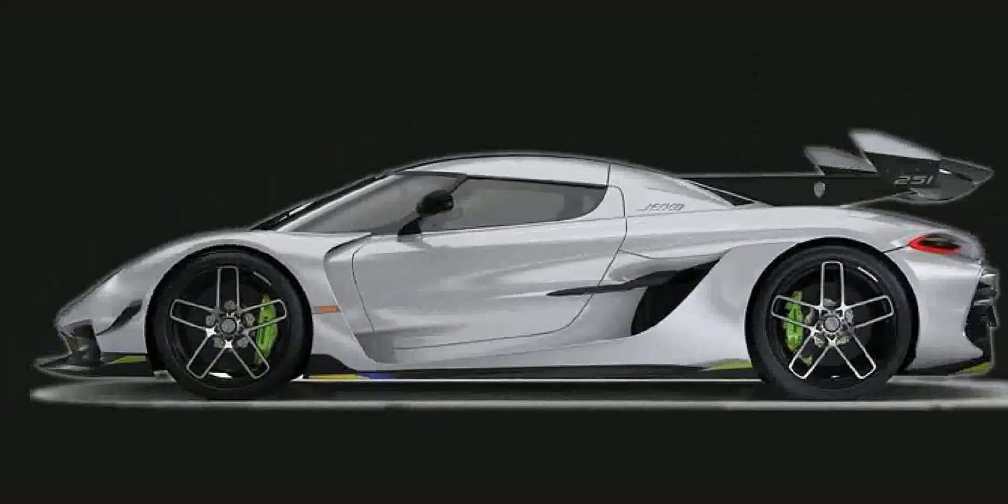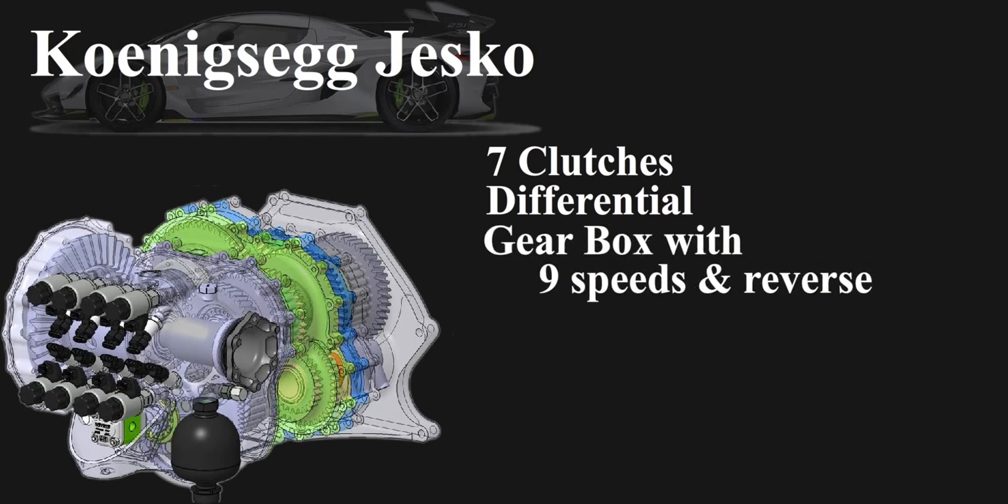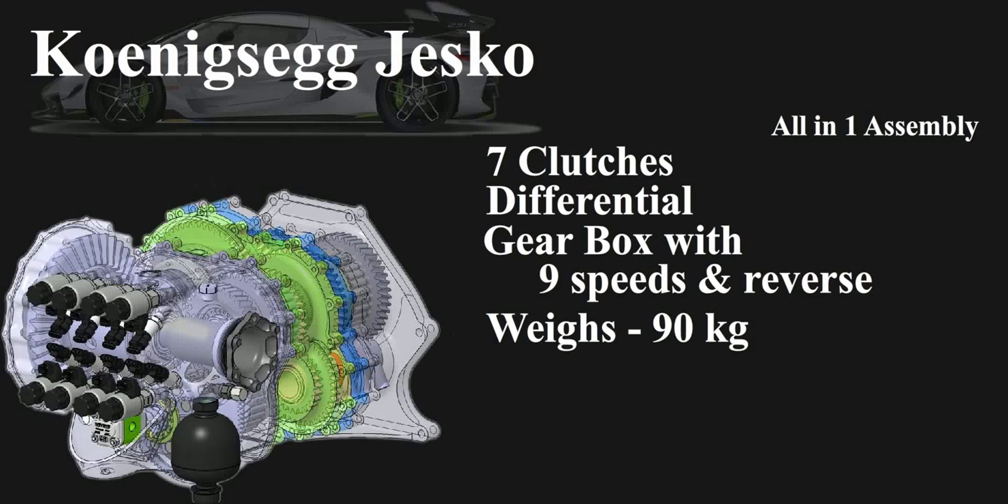This is the gearbox of Koenigsegg Jesko. It has 7 clutches, differential gearbox with 9 speeds and reverse, all built in same assembly, which weighs just 90 kgs. It is considered very light because remember, it's not a toy car. The engine itself makes 1600 hp.